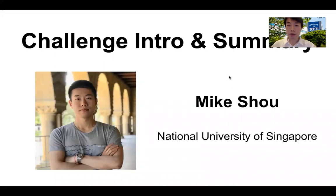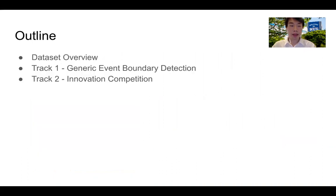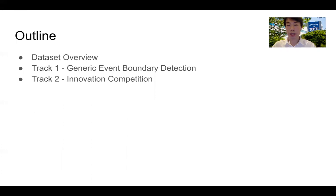Hello everyone, this is Max Scholl from National University of Singapore. Let me give you a brief introduction of our challenge and quickly summarize the experimental setup for different tracks. I will talk about how we annotated the dataset, what it looks like, and what the experimental requirements are for Track 1, focusing on general event boundary detection, and also Track 2, which is more towards seeking innovative solutions that demonstrate the value of general event boundaries on downstream applications.